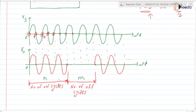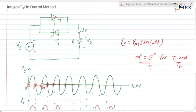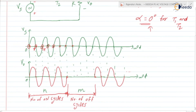So if we vary m and n — the number of on cycles and number of off cycles — then we can vary the output voltage. This is the simple method used in integral cycle control. Integral cycle means we are controlling the cycles together: passing first n cycles, then blocking the next m cycles. To pass the n cycles we turn on thyristors T1 and T2 at alpha equal to zero, and for the next m cycles we do not apply gate signals to any of the thyristors.